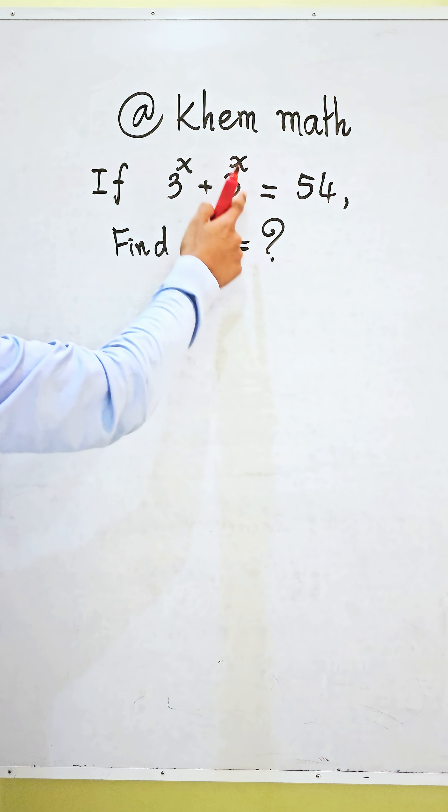If 3 power of x plus 3 power of x equals 54, find the value of x.